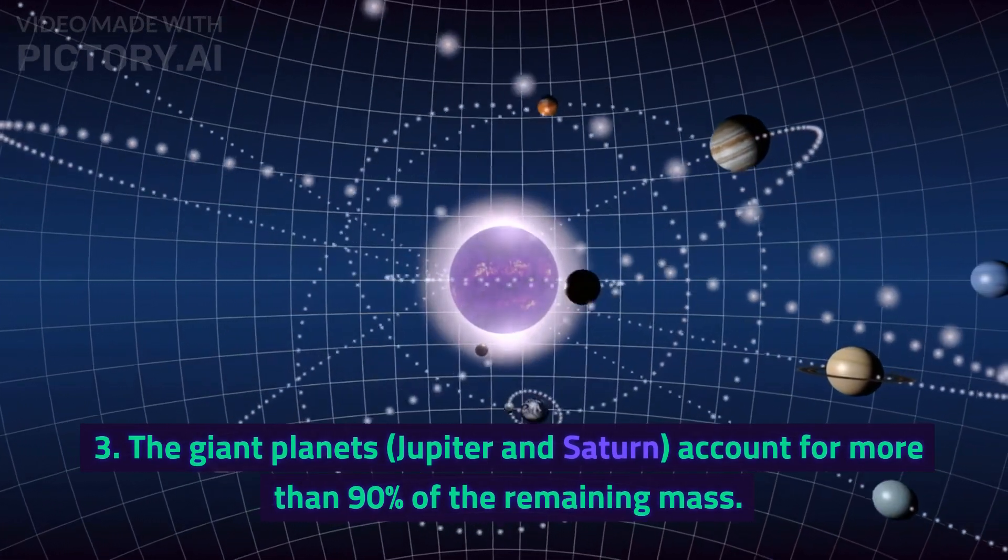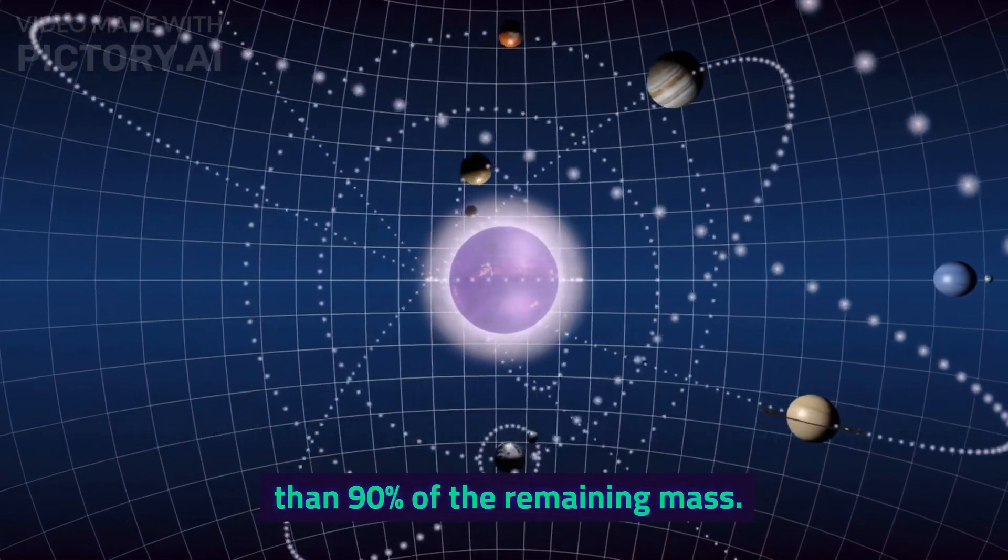Three: The giant planets, Jupiter and Saturn, account for more than 90% of the remaining mass.